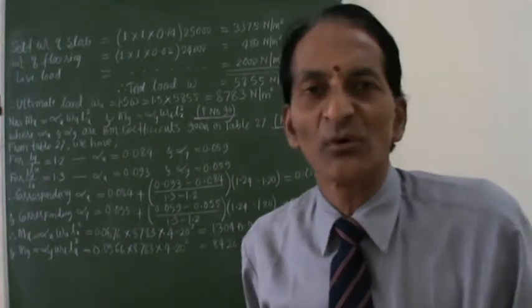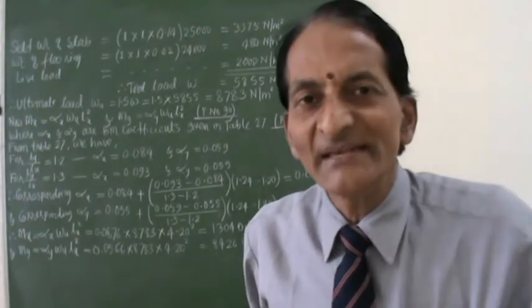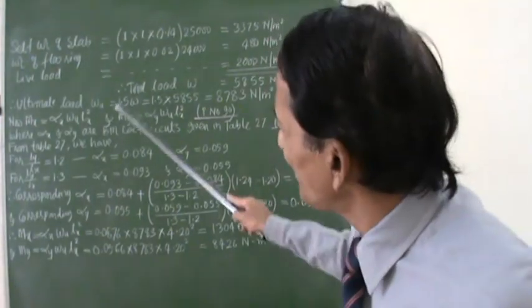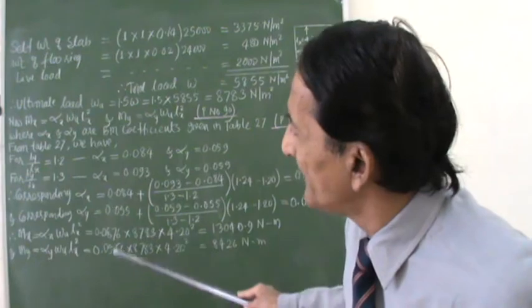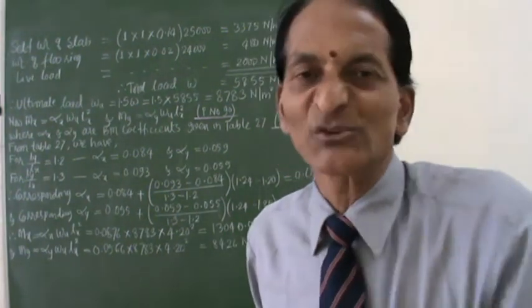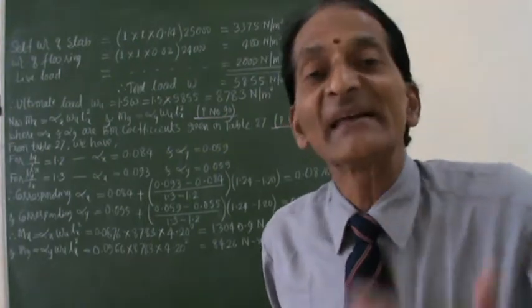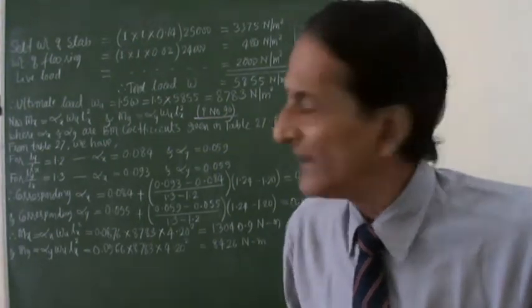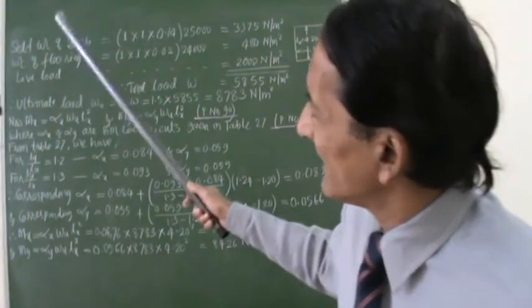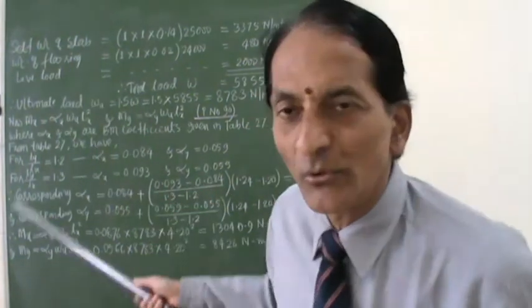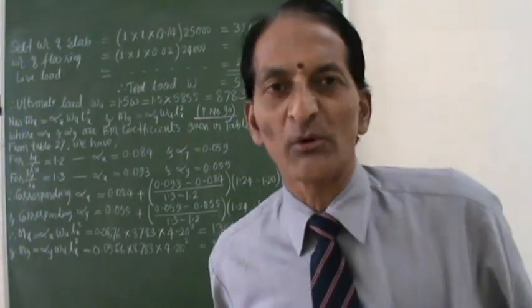What your IS code says is, now the question is, see now, first of all, I will try to solve this problem by using IS code. Then, I will solve it by using Grashof-Rankine's theory. So first of all, I will take up this IS code.